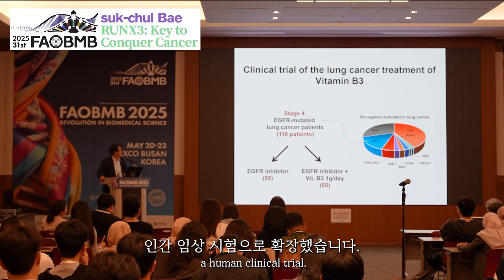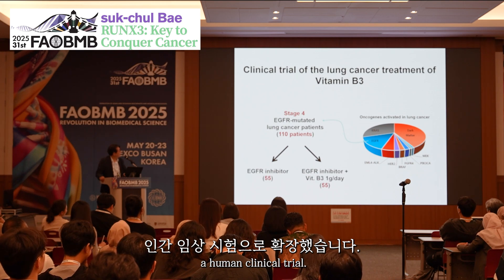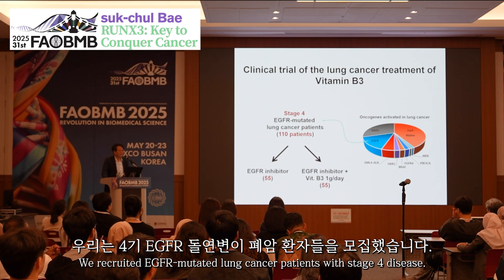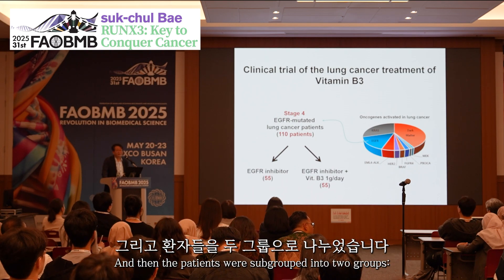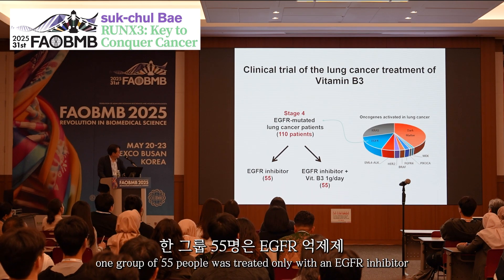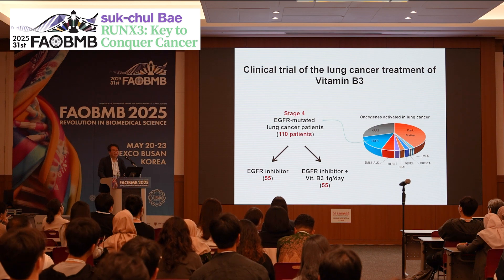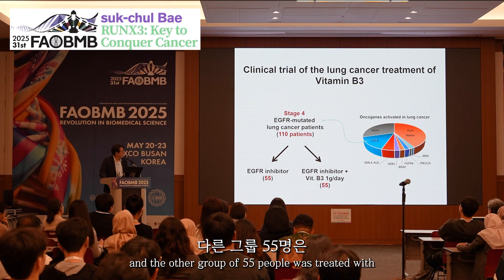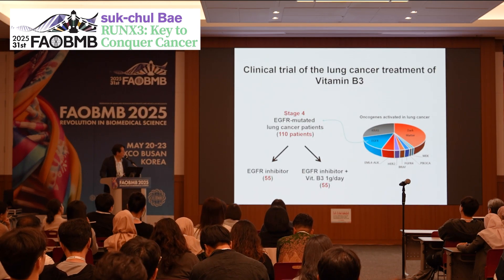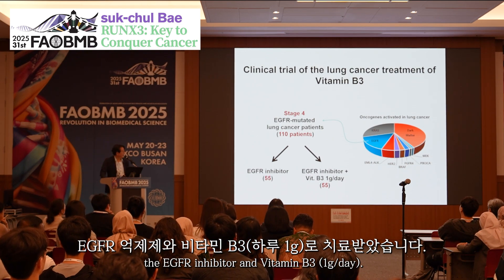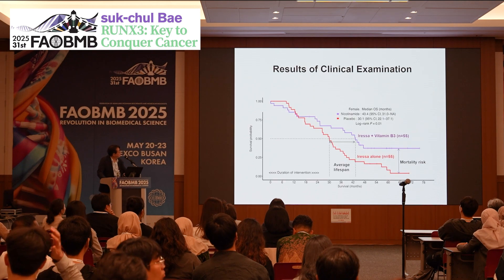We recruited EGFR-mutated lung cancer patients with Stage 4 disease. The patients were subgrouped into two groups: 55% were treated only with the EGFR inhibitor Iressa, and the other group, also 55%, were treated with the EGFR inhibitor and Vitamin B3, 1 gram per day.